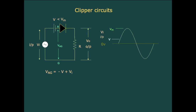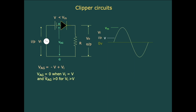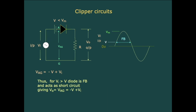We assume the peak value of the sine wave, Vm, is greater than the DC power supply voltage V. VAG equals zero when Vi equals V, and VAG is greater than zero for Vi greater than V, meaning the diode is forward biased. From time T1 to T2 Vi is greater than V, so during this interval the diode is forward biased.